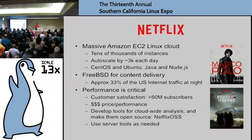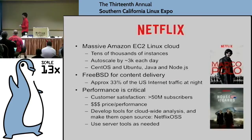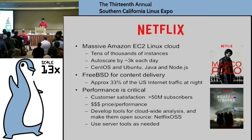I work at Netflix. We have a massive Amazon EC2 Linux cloud, and we also have some FreeBSD for content delivery. Last year when I gave the keynote at SCALE, the primary OS I was working on was a fork of Solaris called Illumos, with Linux secondary. This year the primary OS I'm working on is Linux, and secondary is FreeBSD. So I still get a little perspective when doing OS work from a different point of view, which is really fun.